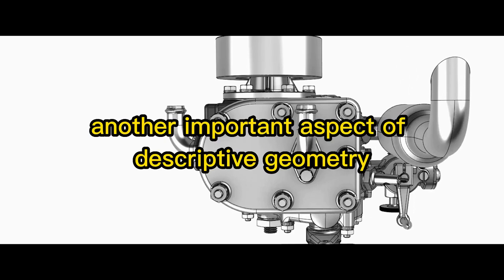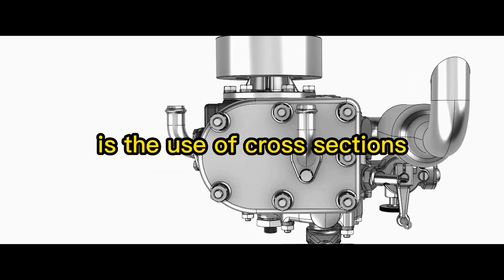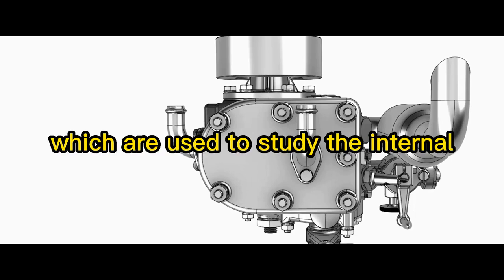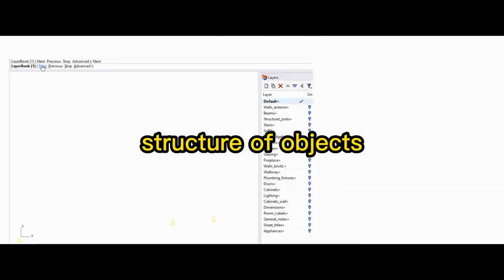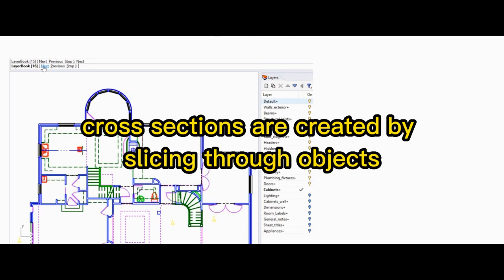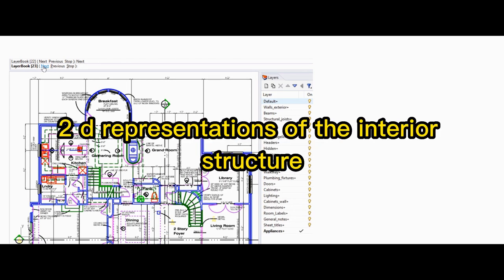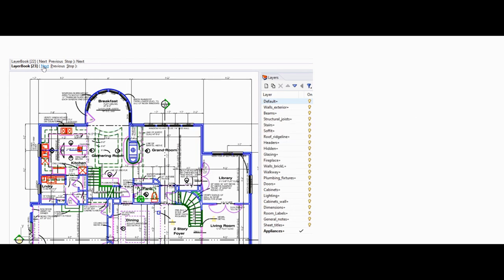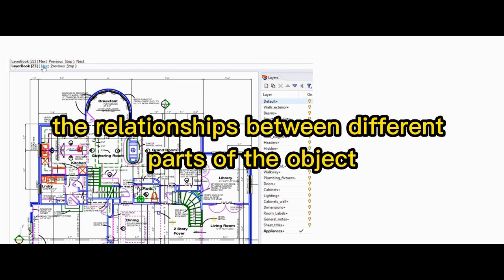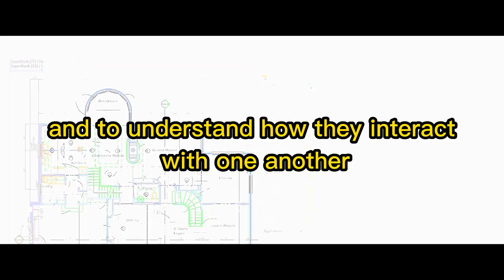Another important aspect of descriptive geometry is the use of cross-sections, which are used to study the internal structure of objects. Cross-sections are created by slicing through objects and creating 2D representations of the interior structure. This can be used to analyze the relationships between different parts of the object and to understand how they interact with one another.